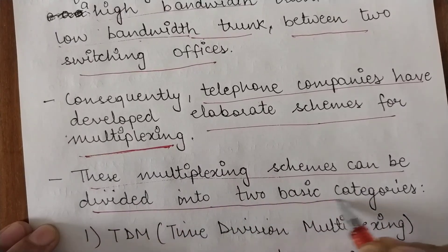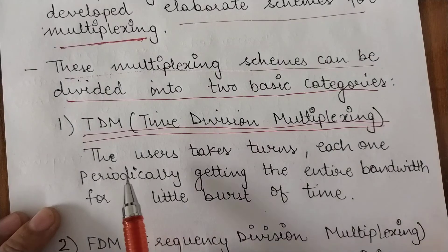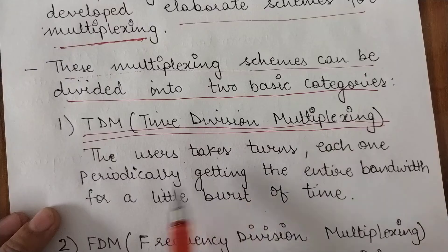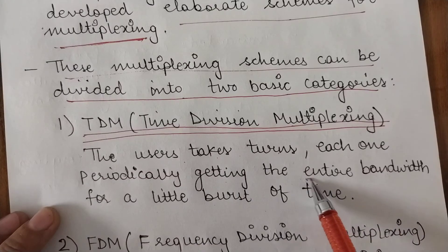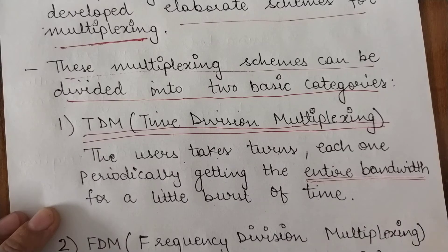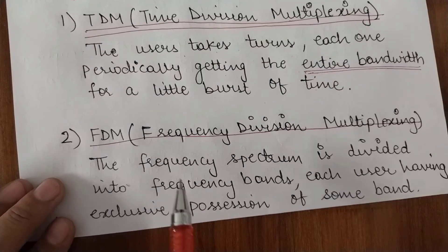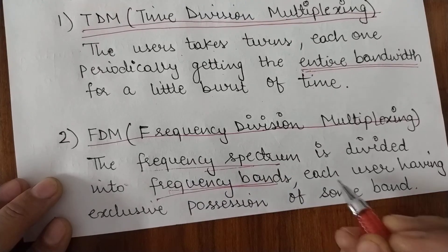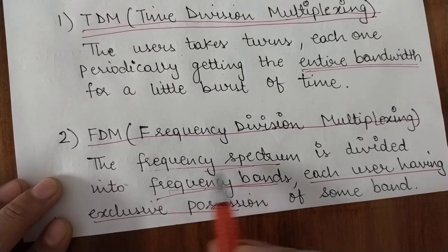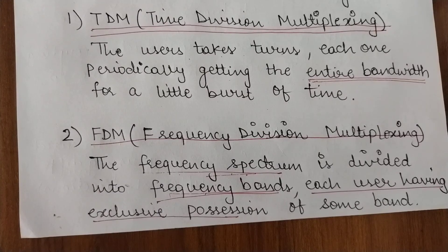These multiplexing schemes can be divided into two basic categories. The first is Time Division Multiplexing, also known as TDM, where users take turns — each one periodically getting the entire bandwidth for a little burst of time. Time is divided, and each user gets a turn during which they have possession of the entire bandwidth for that time frame. The second is Frequency Division Multiplexing, or FDM, where the frequency spectrum is divided into frequency bands and each user can have exclusive possession of some band for as long as they want.